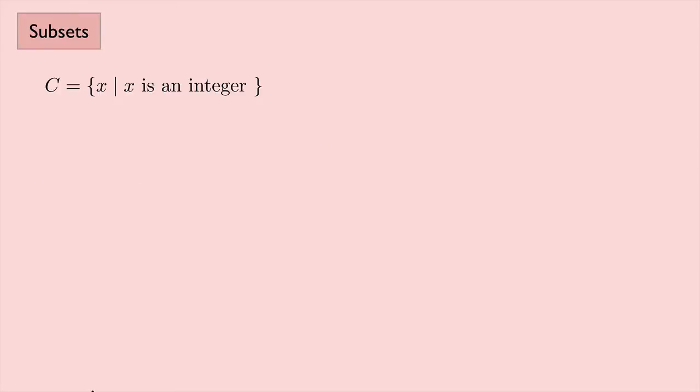Let's look at some examples. Here's the set C, that's the set of all X such that X is an integer. And here's the set D, which is the set of all X such that X is an even integer.